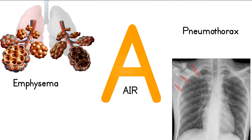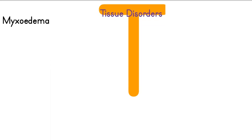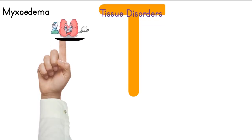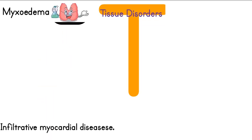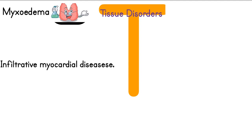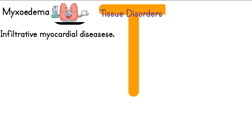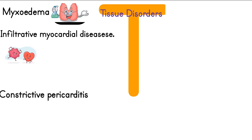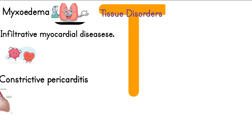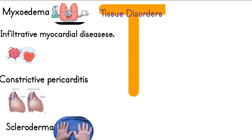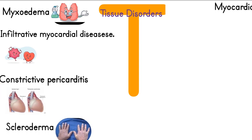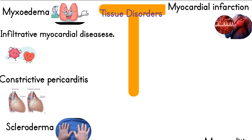T: Tissue disorders — myxedema, infiltrative myocardial diseases, restrictive cardiomyopathy due to amyloidosis, sarcoidosis, hemochromatosis, constrictive pericarditis, scleroderma, myocardial infarction, myocarditis, and cardiomyopathies.